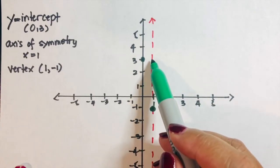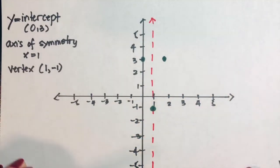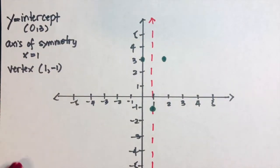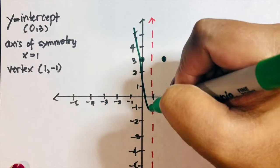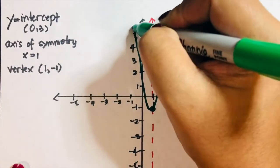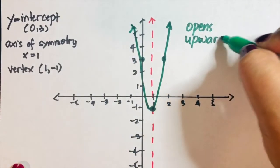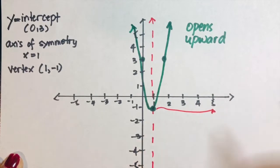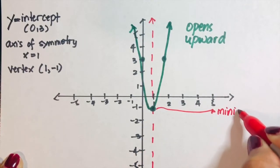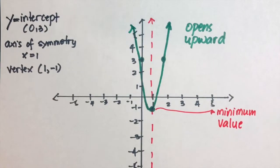This point is 1 unit away from the axis, and if we reflect it, it lands approximately here. If you want to find additional points you can do that. When we connect all these points, the graph opens upward, and since the vertex is at the bottom, we have a minimum value.